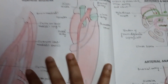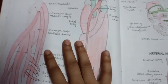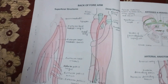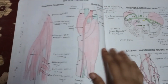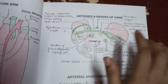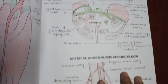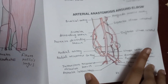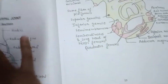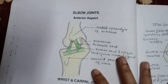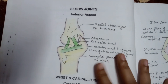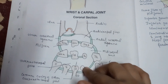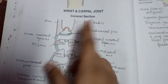Each and every diagram is really very difficult, and I know that I have drawn them all. This is the back of forearm, arteries and nerves of hand, arterial anastomosis around the elbow. After that, the diagram is about your elbow joint — this is the anterior aspect — and in the case of wrist and carpal joint, this is the coronal section showing the bones.